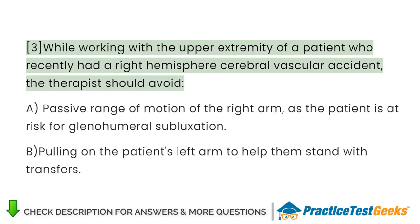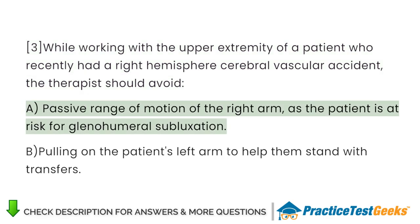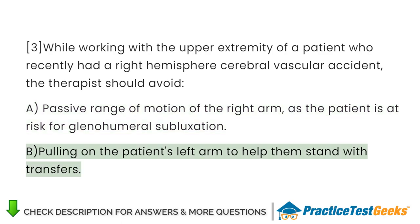While working with the upper extremity of a patient who recently had a right hemisphere cerebrovascular accident, the therapist should avoid: A. Passive range of motion of the right arm, as the patient is at risk for glenohumeral subluxation. B. Pulling on the patient's left arm to help them stand with transfers.